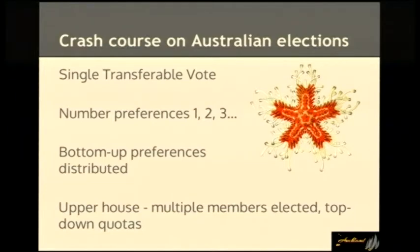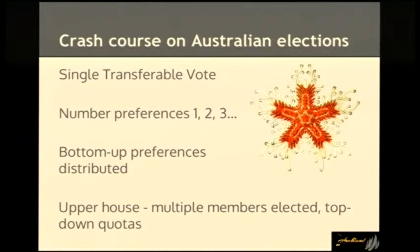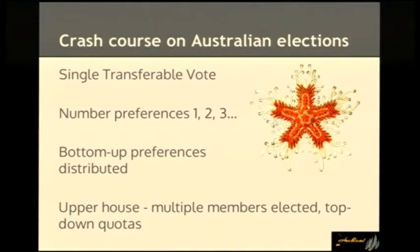A crash course in Australian elections. If you want to look it up, the system we use is called a single transferable vote. Most of us are Australian voters — we number off boxes for different candidates: one, two, three, four. For the lower house, we're voting for one candidate. It's a bottom-up process, eliminating candidates with the lowest number of votes and redistributing preferences until we end up with a majority. For the upper houses in most Australian states, we're electing multiple members, so there's also a top-down process with a quota.